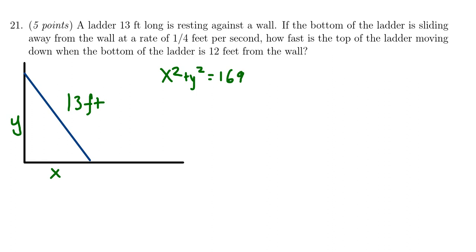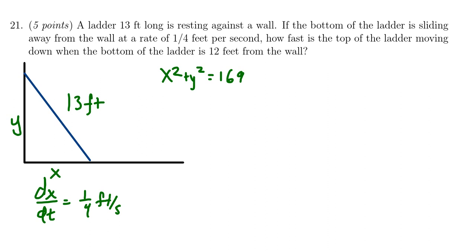So if the bottom of the ladder is sliding away from the wall at a rate of one quarter foot per second, how fast is the top of the ladder moving down? This is describing a derivative, so we get that dX/dt at this moment in time is going to be one fourth foot per second. So we know how quickly the X value is changing over time. We want to know how fast it's falling down — what is dY/dt at this moment.